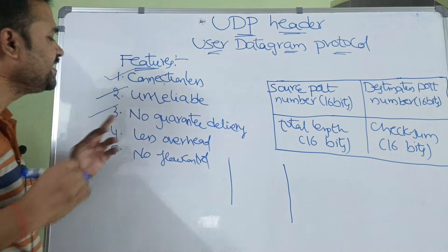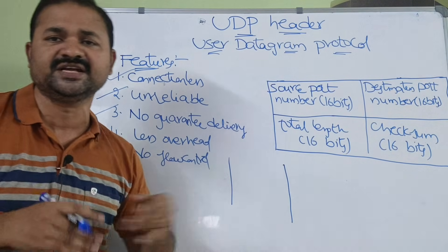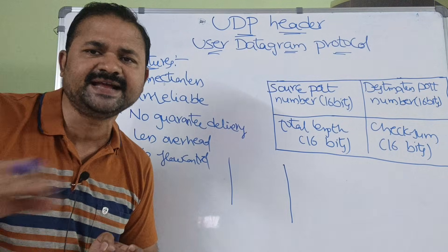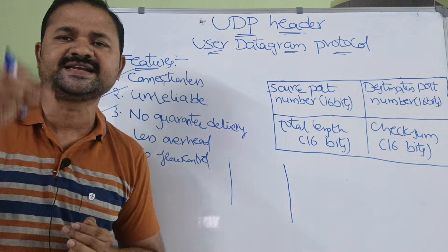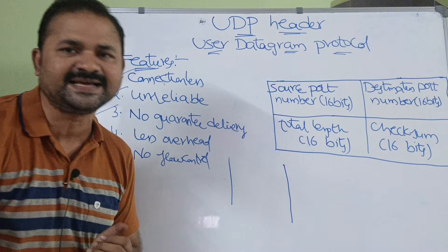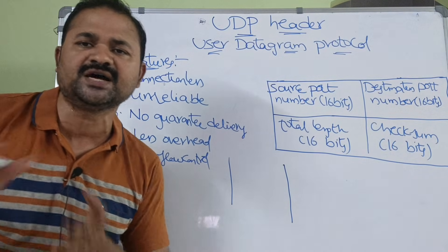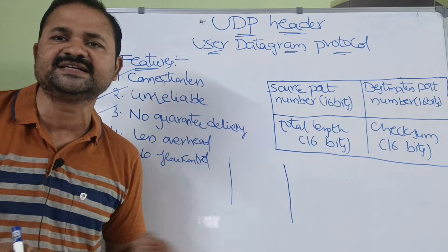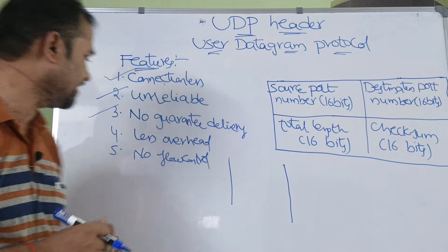Next, there is no guarantee delivery. The sender can send the data, but the sender doesn't worry about whether that packet is successfully reached to the destination or not. That's why we can say that there is no guarantee delivery here.